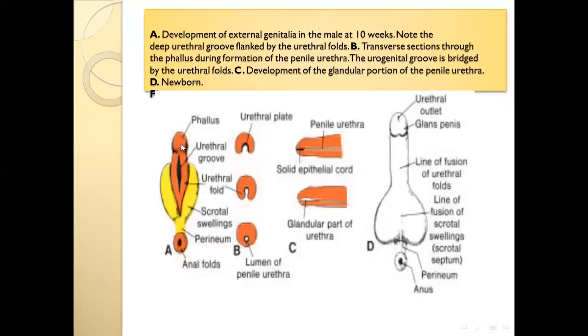Now, external genitalia in the male. The genital tubercle elongates and is called the phallus. You can see the urethral folds — they elongate. There is a groove called the urethral groove, but this urethral groove does not reach to the most distal part. Here we also have the genital or scrotal swelling.